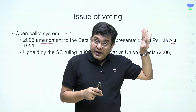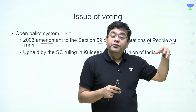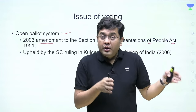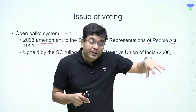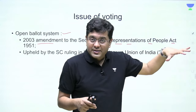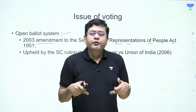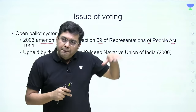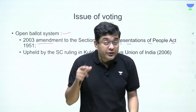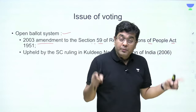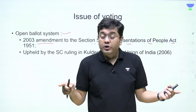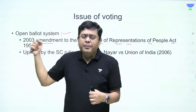This 2003 amendment also paved the way for a norm we see today: even if you are not a voter of a particular state, you can be elected to Rajya Sabha from that state. For example, the Uttar Pradesh legislative assembly can elect a person from Karnataka as their Rajya Sabha representative. This amendment eventually paved the way for Dr. Manmohan Singh to be sent to Rajya Sabha from Assam.